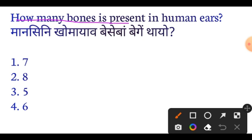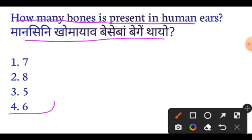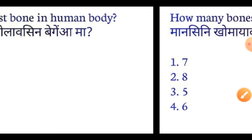How many bones are present in the human ear? The answer is 6 bones — 3 in each ear, so total 6 bones. Important. Next question.